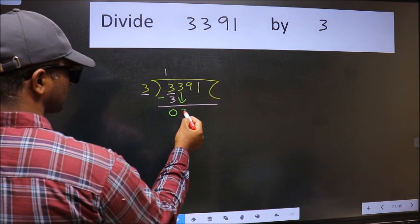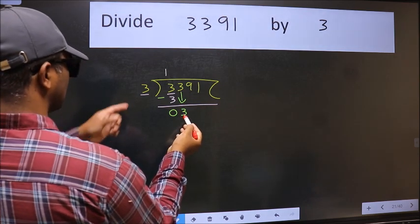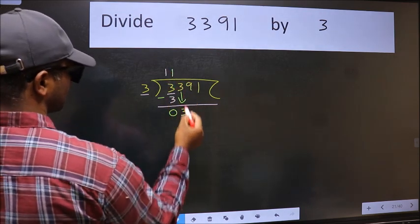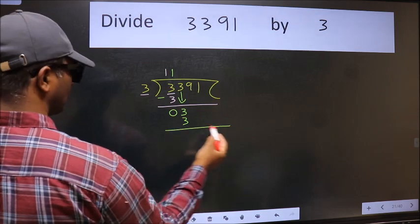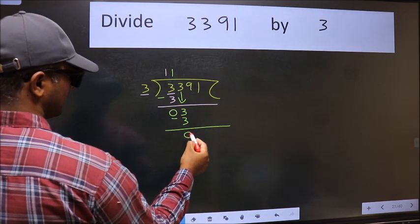After this, bring down the beside number. So 3 down. When do we get 3 in 3 table? 3 once 3. Now we should subtract. We get 0.